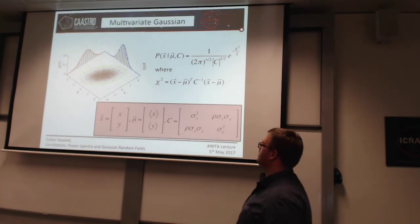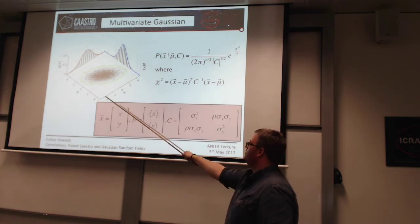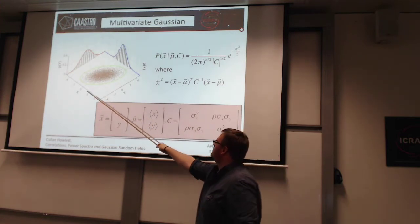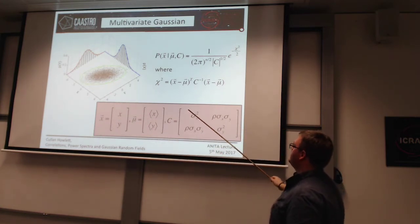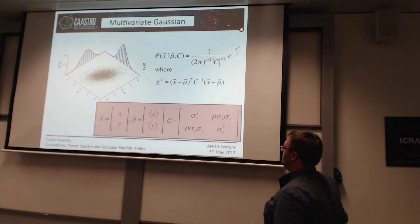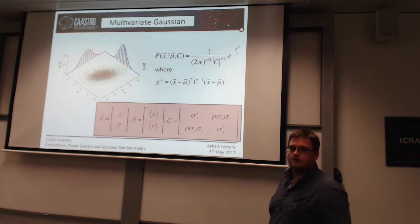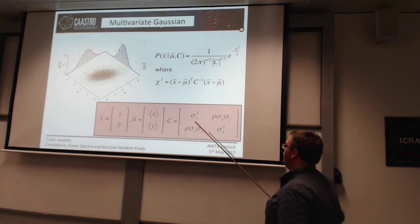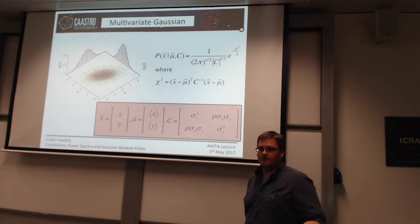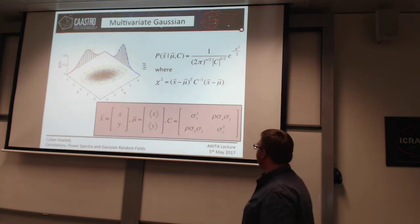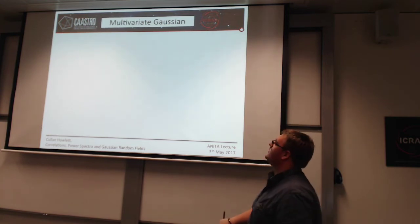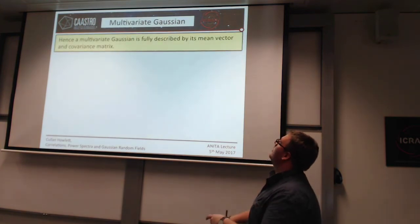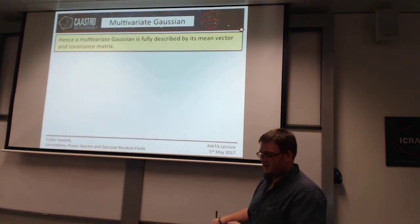For this two-dimensional case, you've got two variables x and y with some mean roughly centered on zero. They have a covariance matrix, which on the diagonal contains the variances of those two variables, and on the off-diagonal encodes the covariance between them. Just like a single-dimensional Gaussian, the multivariate Gaussian is fully described by its mean vector and its covariance matrix.